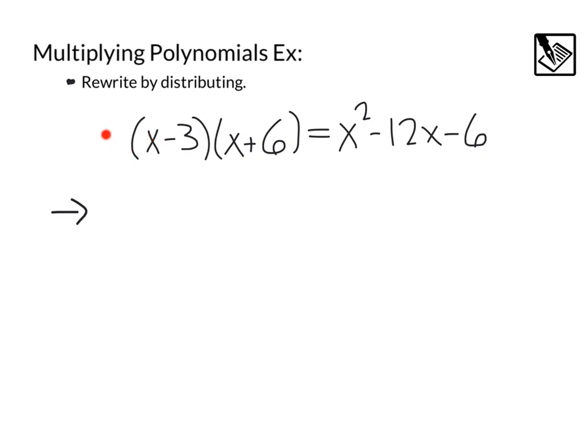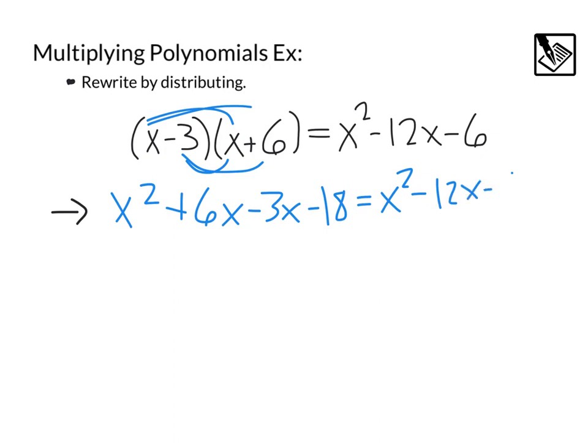Our next example involves multiplying polynomials. Here we've got x minus 3 times x plus 6 equals x squared minus 12x minus 6. To make this simpler, we're going to rewrite by distributing that out. That's going to give us x times x, x squared plus 6x minus 3x minus 18. And all of that's going to equal what we had before, minus 12x minus 6.